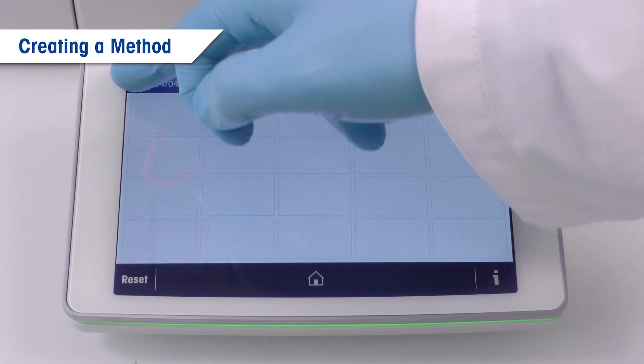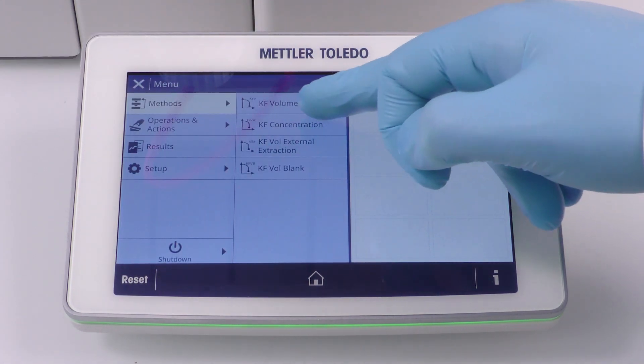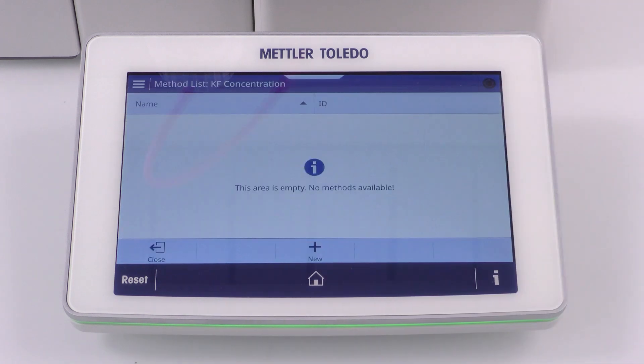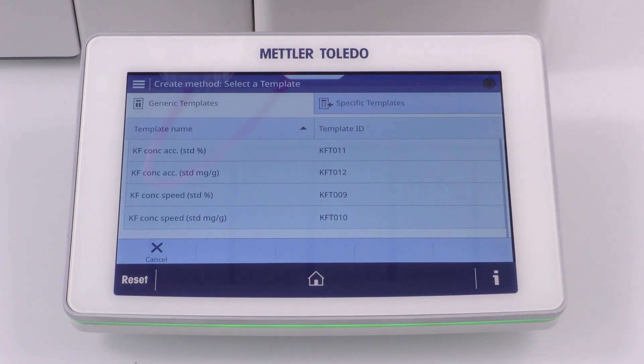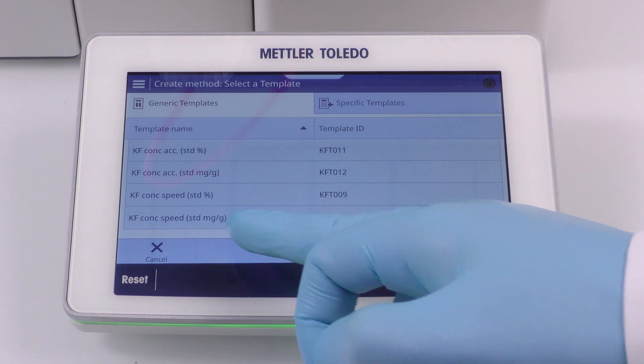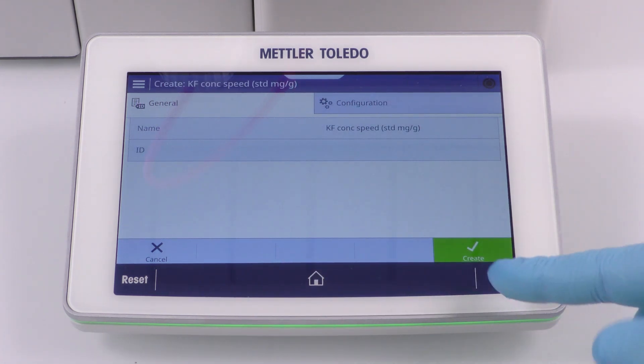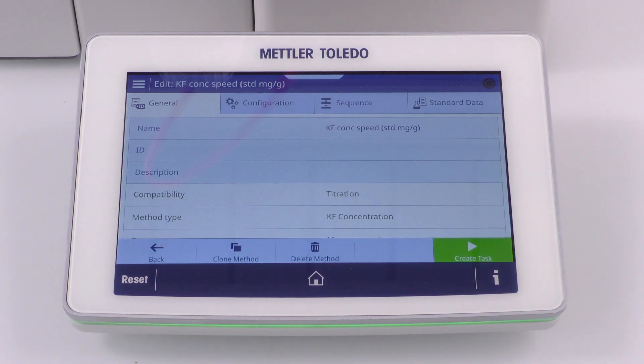We are now ready to create the method for the titrant concentration determination. Choose a template for a standard defined in mg per gram. Give it the name or ID and save it. In our example, we do not need to configure the method any further. For more information on method configuration and on all method parameters, please consult the reference manual.